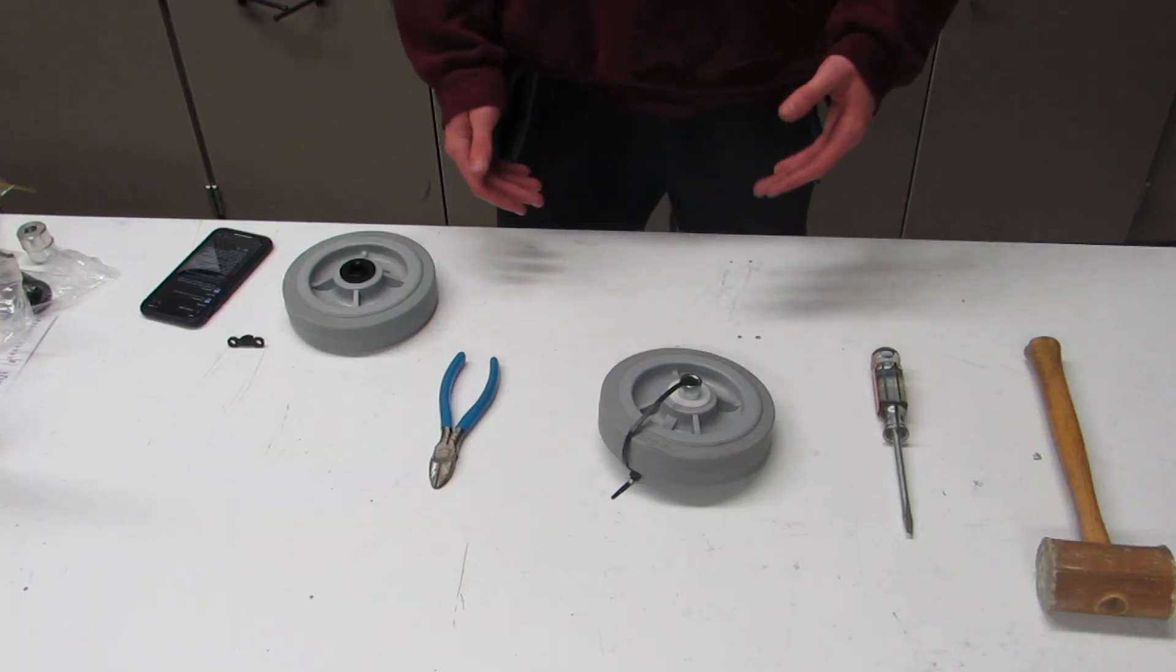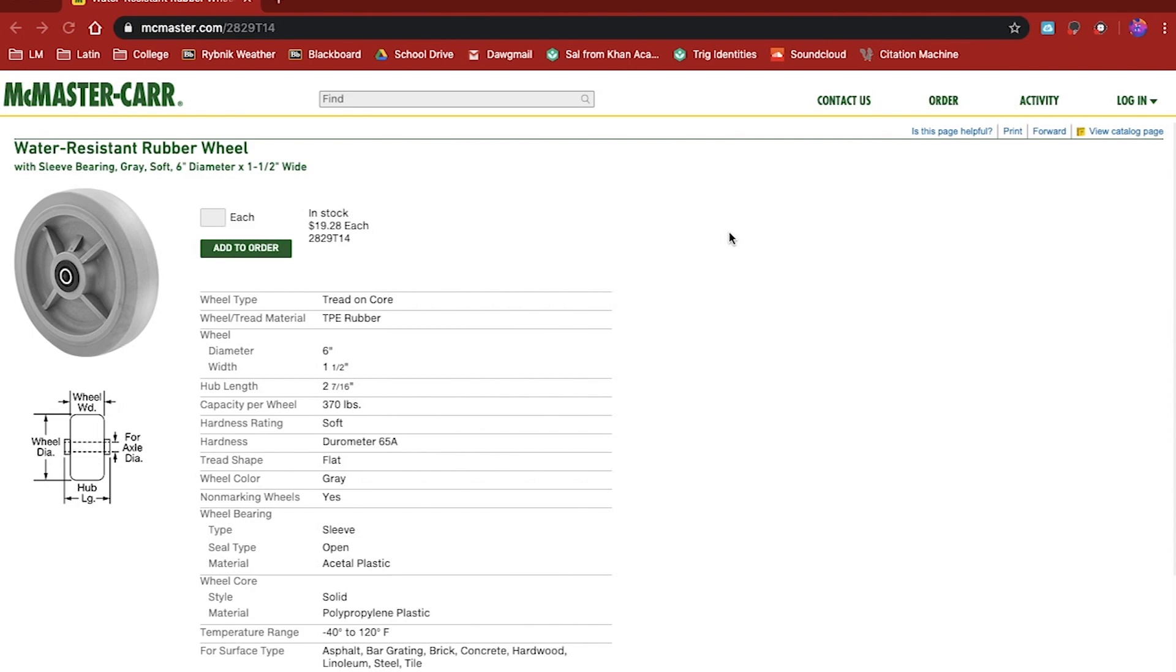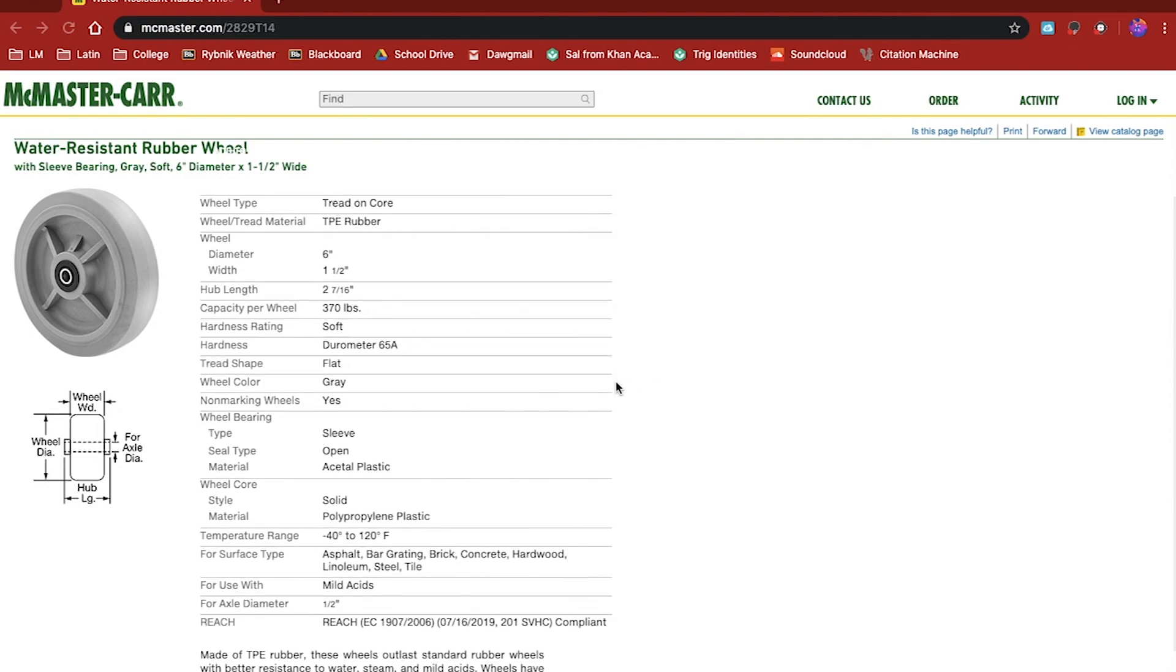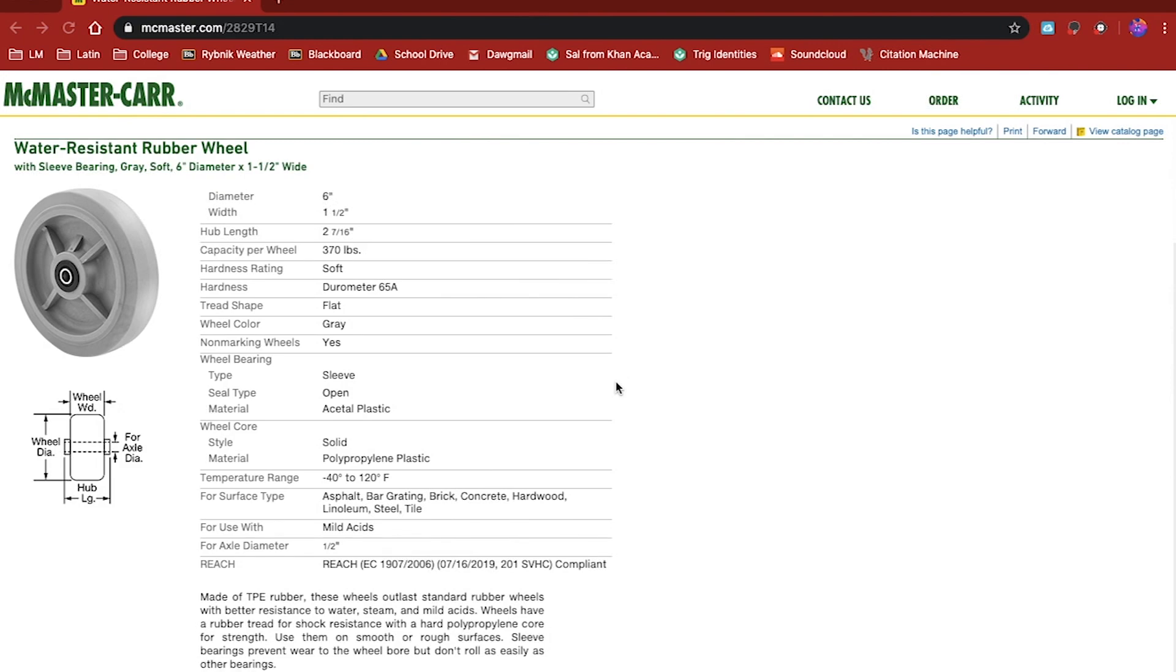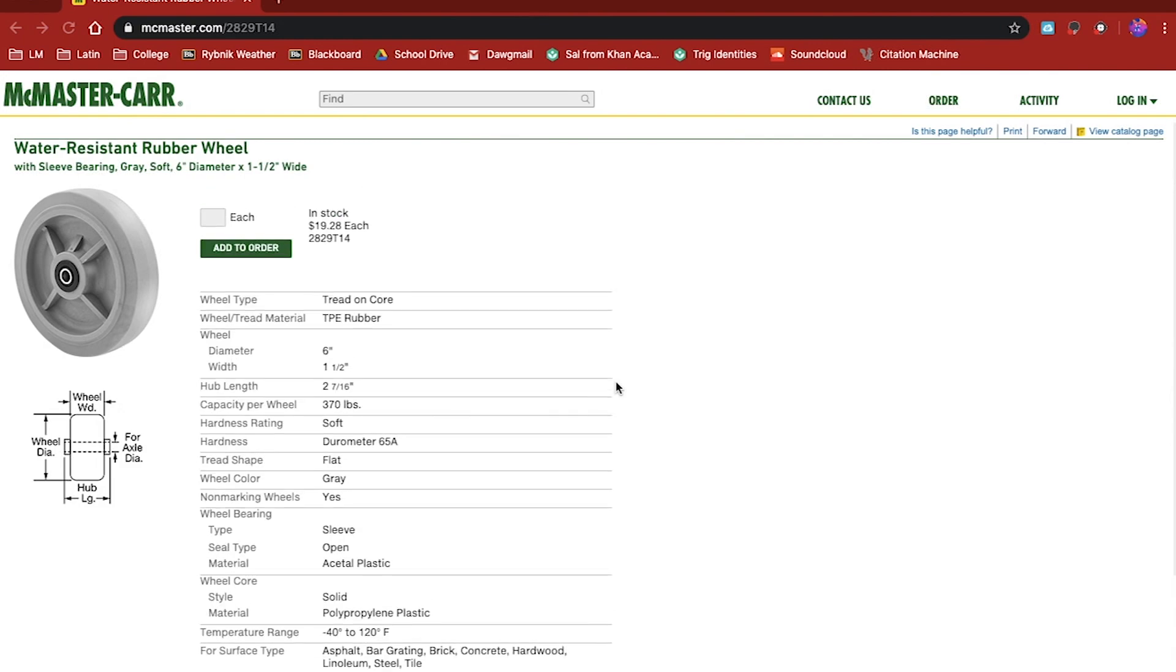A few things to note before we start working with our Colsons is that this is the 6-inch outer diameter, 1 and 1/2 inch inner diameter Colson wheels from McMaster Carr. These are really useful wheels. We use them for our drive bases and they can be used for several other things.